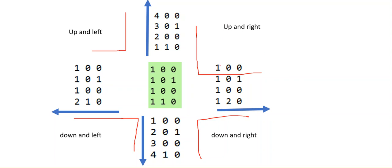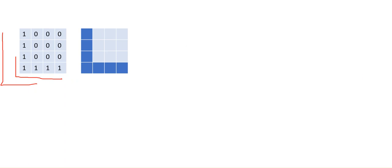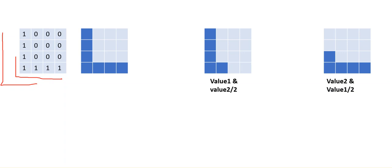Next, we combine pairs of these matrices to form L shapes. The four combinations to consider are: up and right, down and right, down and left, and up and left — covering all four orientations. Now, for a concrete example: consider a matrix with four ones going upward and four going left-right. If you pause and think about it, there are only two L shapes possible here — one is two-by-four and the other is four-by-two.